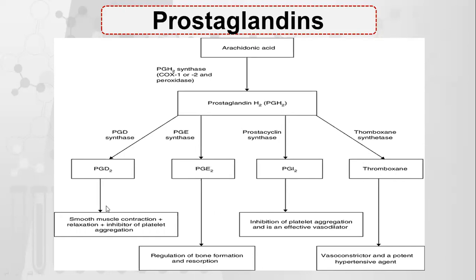Regarding functions: PGI2 performs smooth muscle contraction and relaxation plus inhibits platelet aggregation. PGE2 regulates bone formation and resorption. PGI2 is also an effective vasodilator and inhibits platelet aggregation. Thromboxane is a vasoconstrictor and a potent hypertensive agent, meaning it increases blood pressure.